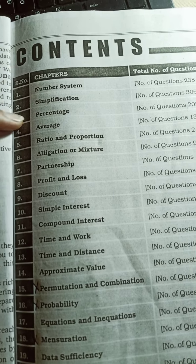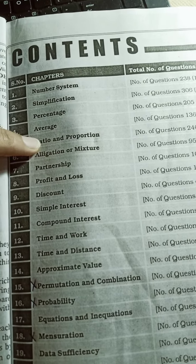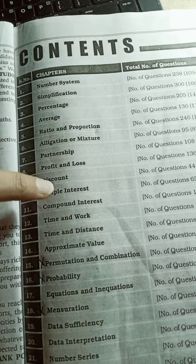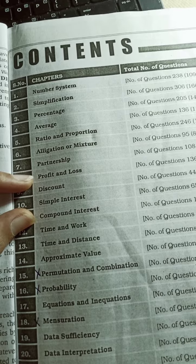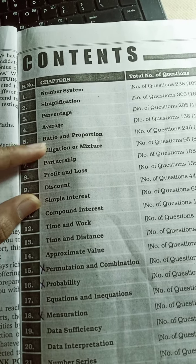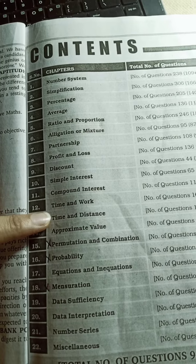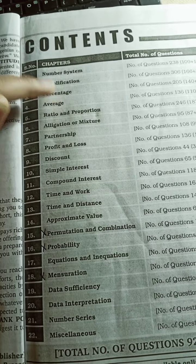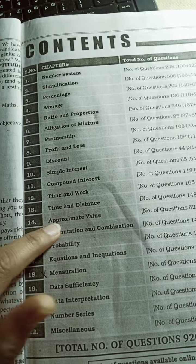Daily 15-20 questions in 4 chapters: ratio and proportion, then allegation, mixture, partnership, profit and loss, discount, simple interest, compound interest, time and work, time and distance, approximate value - add these to your daily practice.